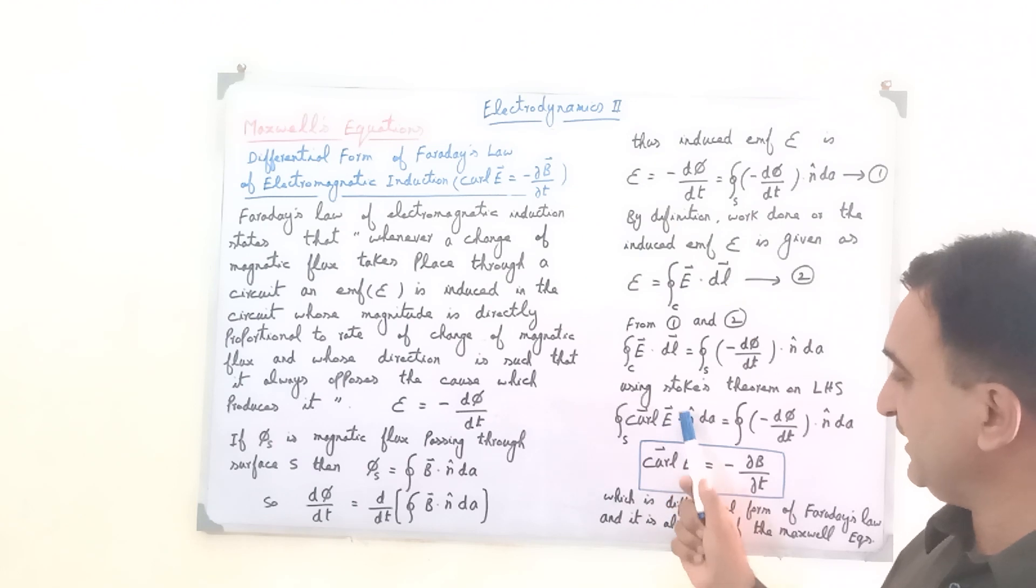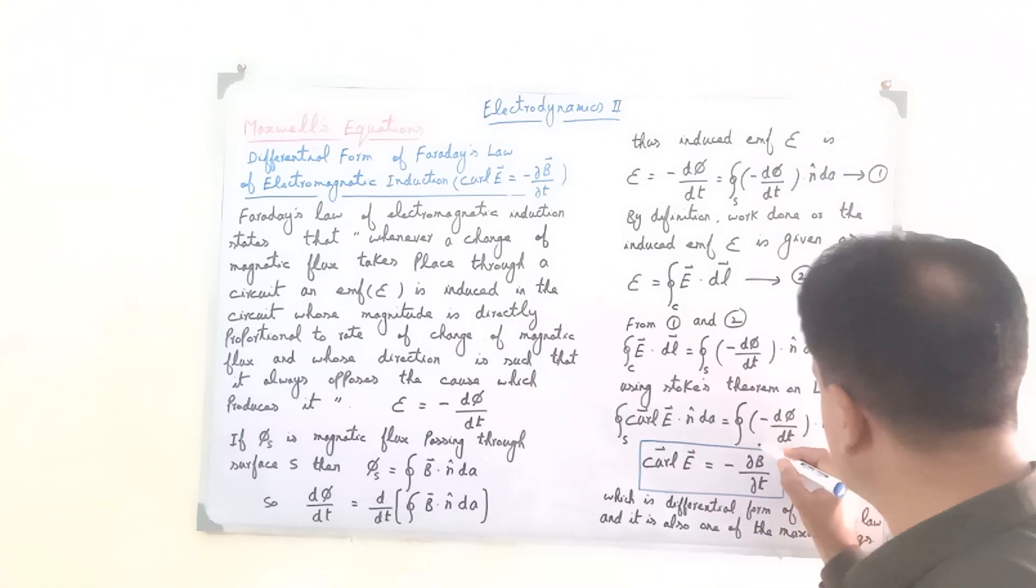So the surface integral of curl E dot n unit vector dA is equal to the right hand side, which is also a surface integral.